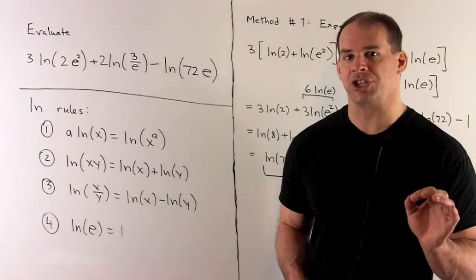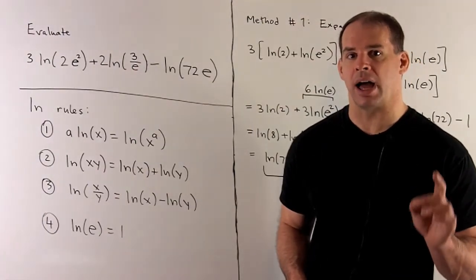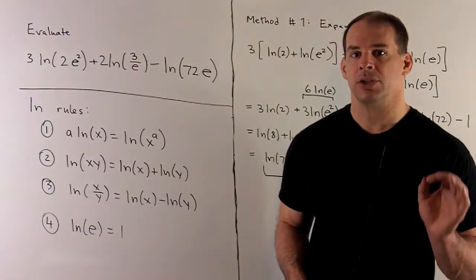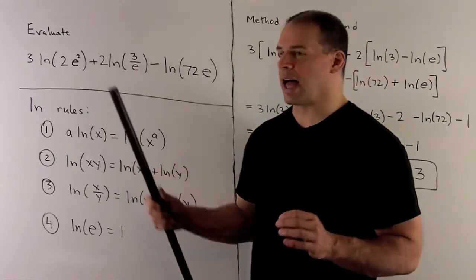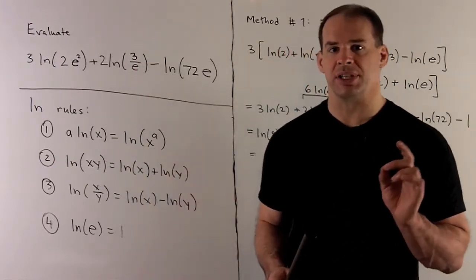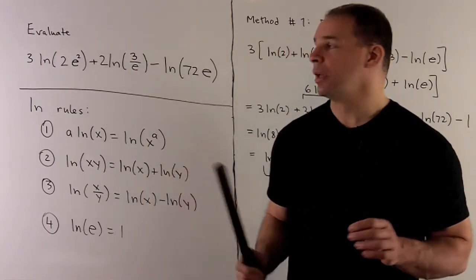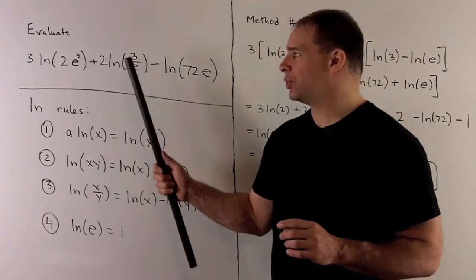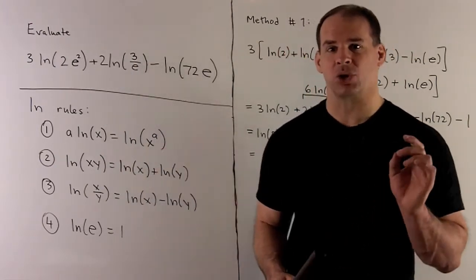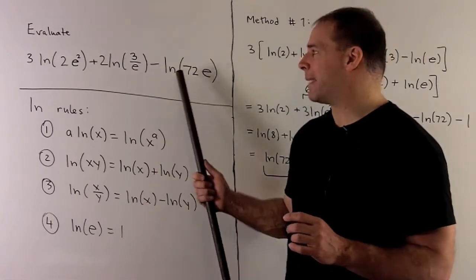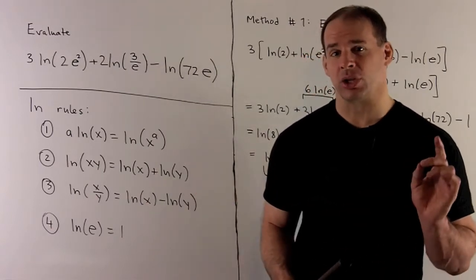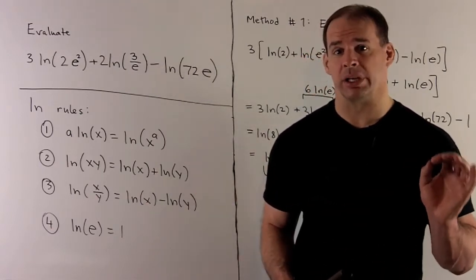Evaluate the following expression in natural log: 3 times natural log of 2e squared, plus 2 times natural log of 3 over e, minus natural log of 72e.